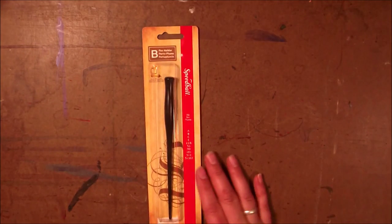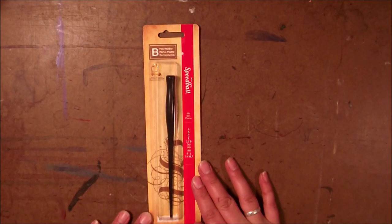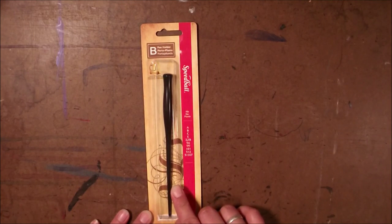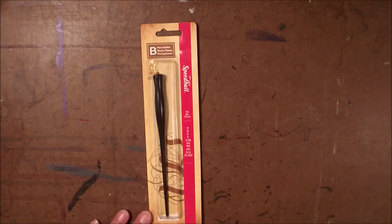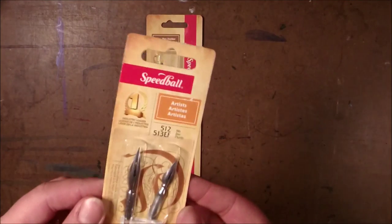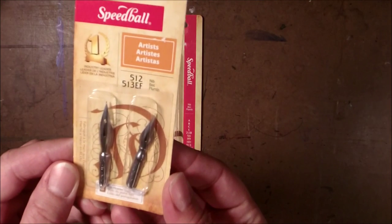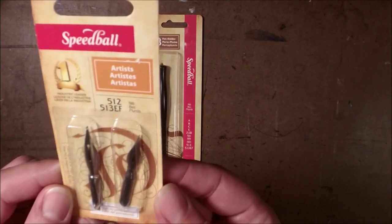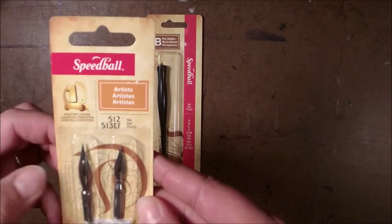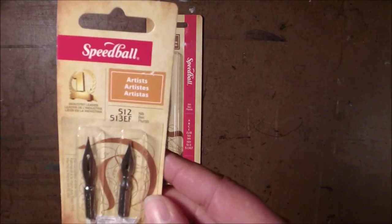All right guys let's get started. I picked up a Speedball pen holder and this is a plastic pen handle and you can add interchangeable nibs and the nibs are these small metal contraptions.